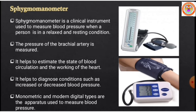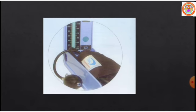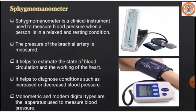The sphygmomanometer is a clinical instrument which uses mercury to measure the blood pressure of an individual in different physical conditions. There are also digital modern machines available. Digital types of apparatus are also used to measure blood pressure. The conventional mercury sphygmomanometer and the modern digital blood pressure instrument both precisely measure the pressure of an individual.